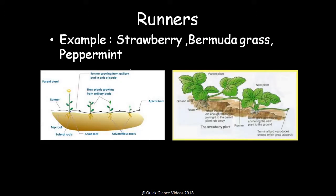Examples of runners include strawberry, Bermuda grass, and peppermint. You can see the runner near the soil surface — a node is there, roots stem out, and a shoot comes up. This is how propagation takes place in mint, for example.